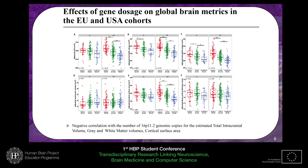First, about the global brain metrics. In red you have the deletion carriers, in blue the duplication carriers, and in the middle the merged control groups for the Europe and United States cohorts. The main message is that we see a negative correlation between the number of genomic copies and the estimated total intracranial volume, grey matter volume, white matter volume, as well as the mid-cortical surface area. At minimum, we replicate the previous results, but on a larger dataset.